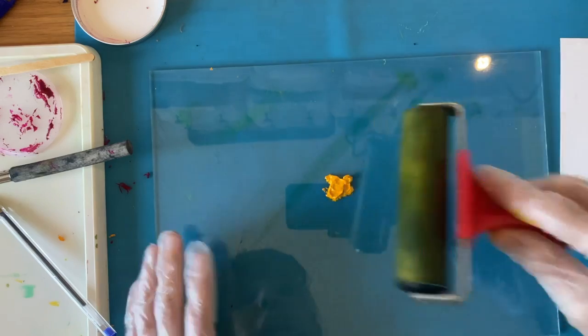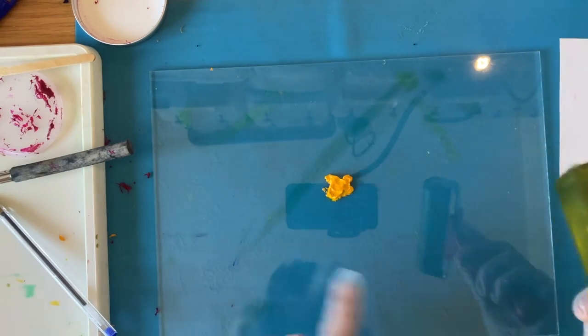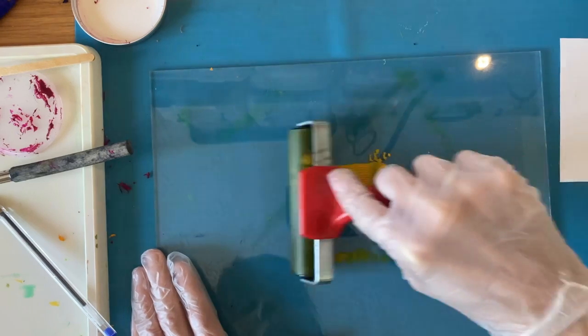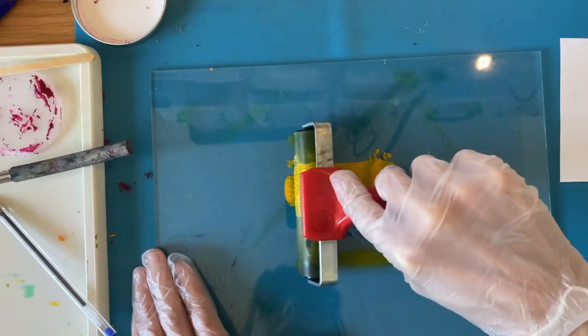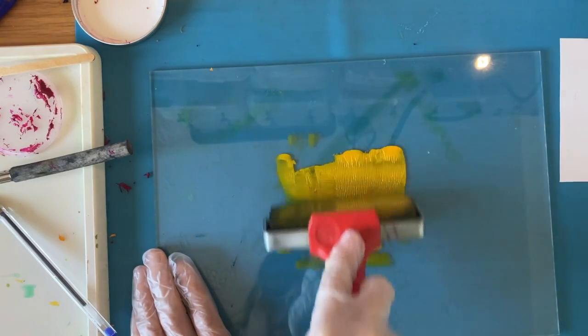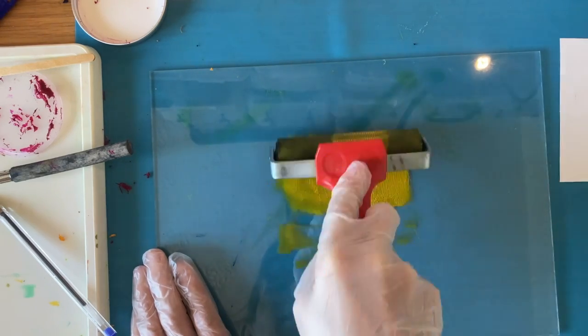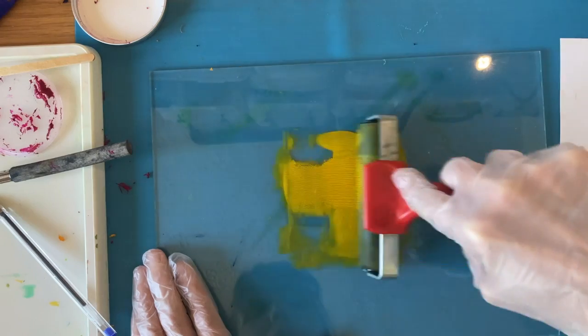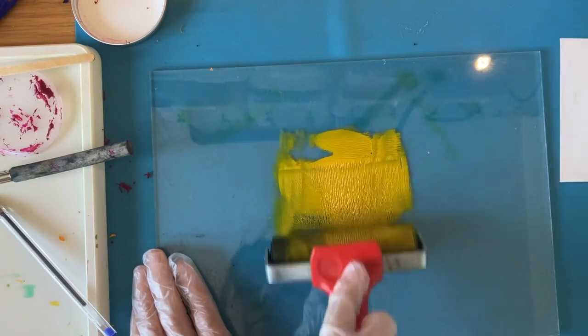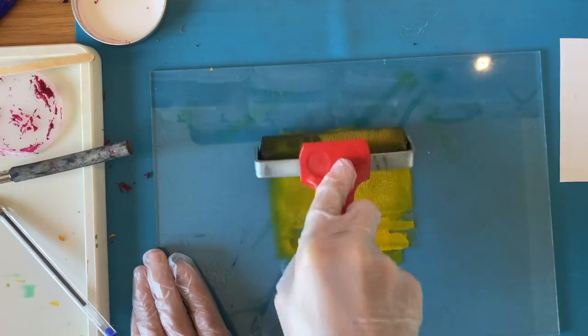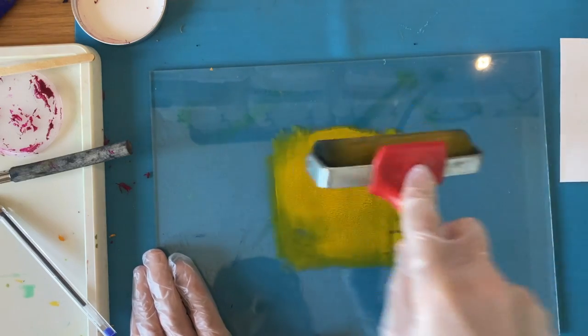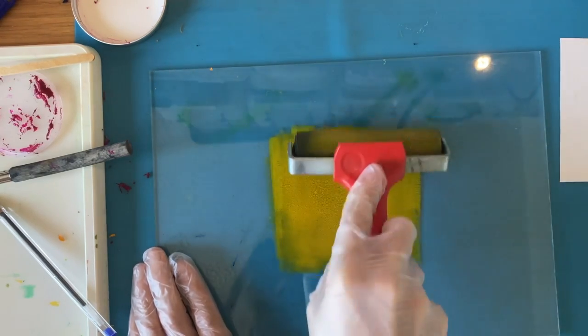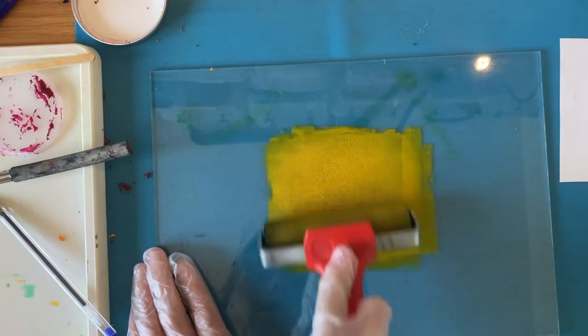So once you've got your blob in the center, you take your roller and you just want to cover the very center. You don't want to cover the whole sheet, we're just doing a small area in the middle because we're going to do quite small prints. You start by rolling it backwards and forwards in the center, then turn it 90 degrees and go up and down the other way. It doesn't cover it straight away, but if you keep going over it and alternating between going one way and then the other, slowly it starts to spread evenly across the center.